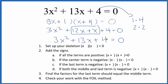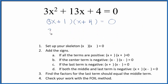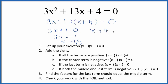Now let's find the values for x that make this entire side equal 0. Setting 3x plus 1 equal to 0: 3x equals negative 1, so x equals negative one-third. Over here, x plus 4 equals 0, so x equals negative 4.